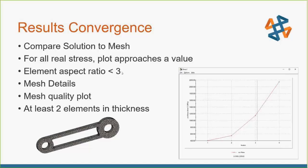The aspect ratio compares the sides of a triangle element. If it's equilateral, the aspect ratio is 1. If you have a triangle with legs of 1, 3, and 4, the aspect ratio would be 4 — a ratio of 1 to 4. We want to keep this under 3 as much as possible.